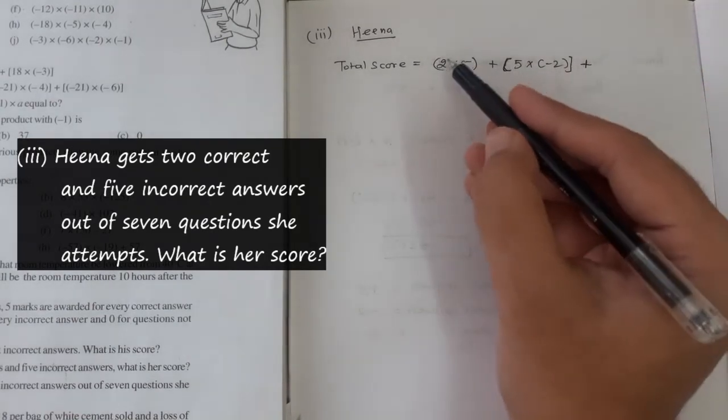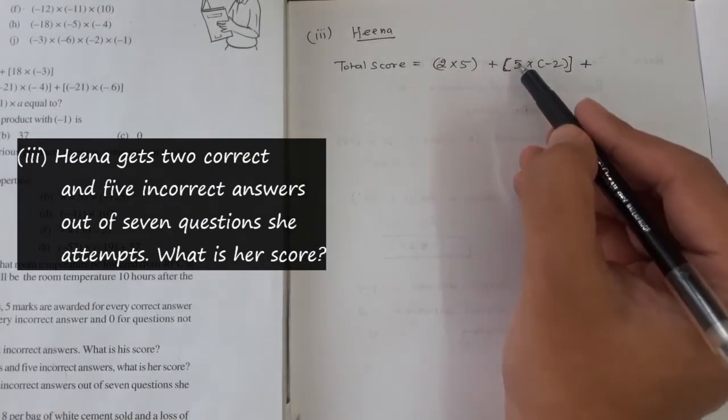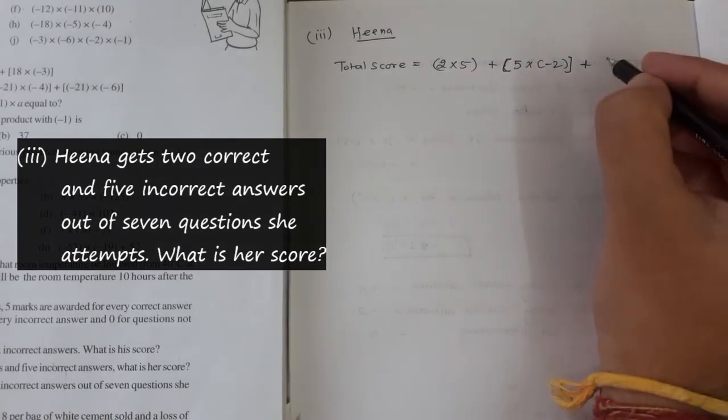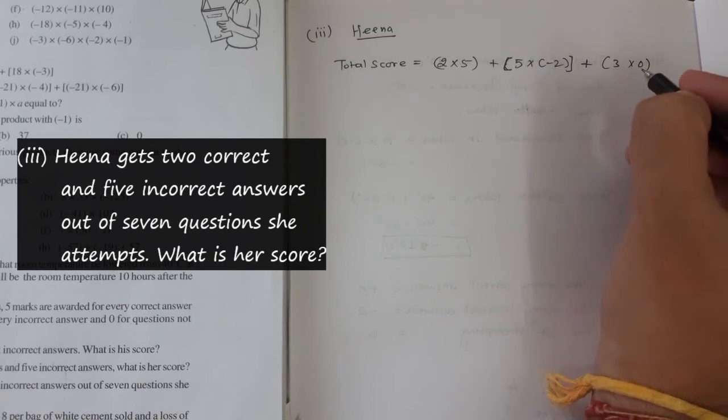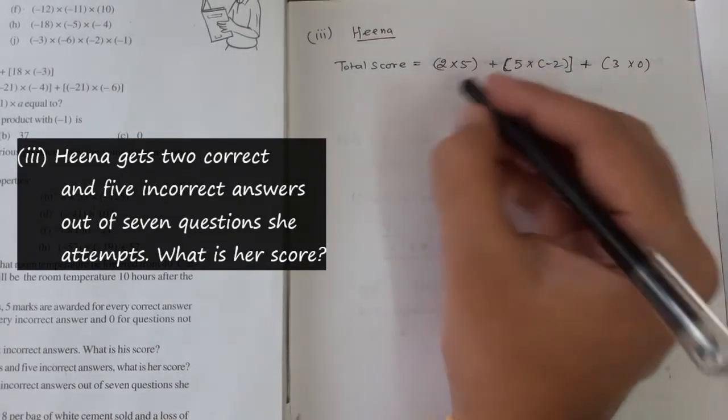And in total, she has attempted 2 plus 5, which is 7. So 3 are still remaining. So 3 times 0 for not attempting.